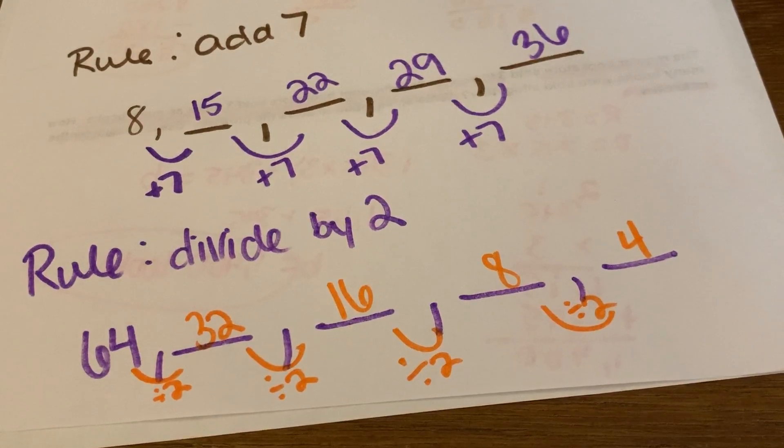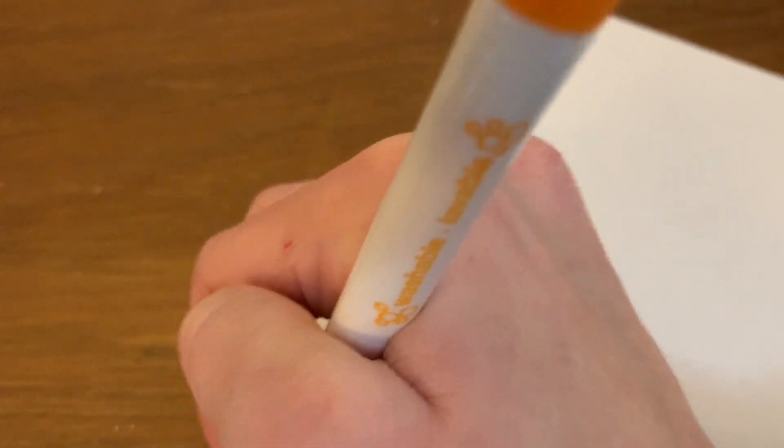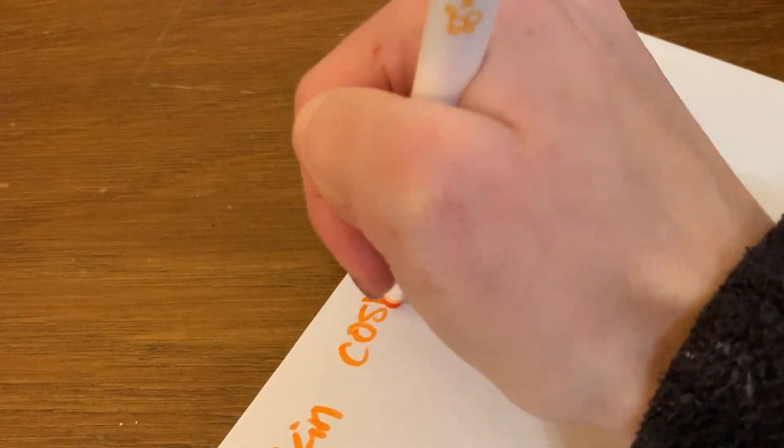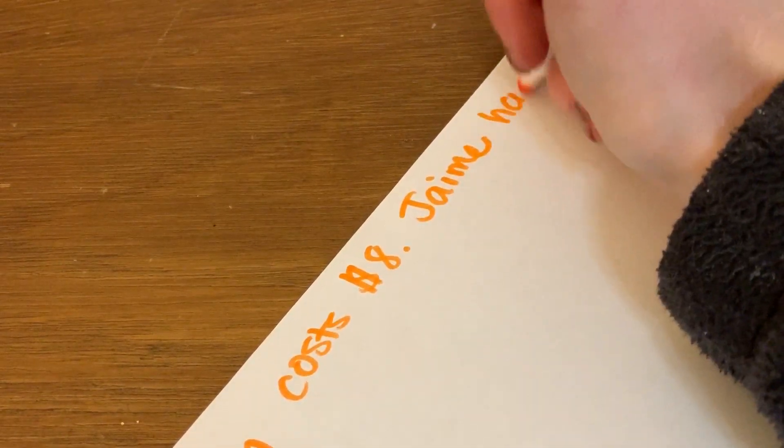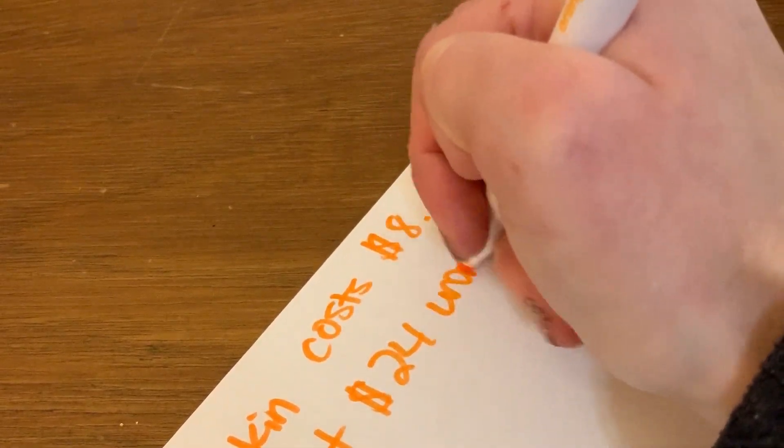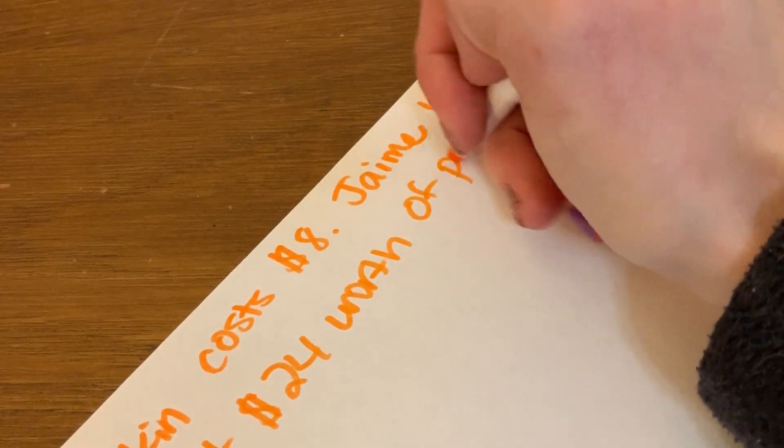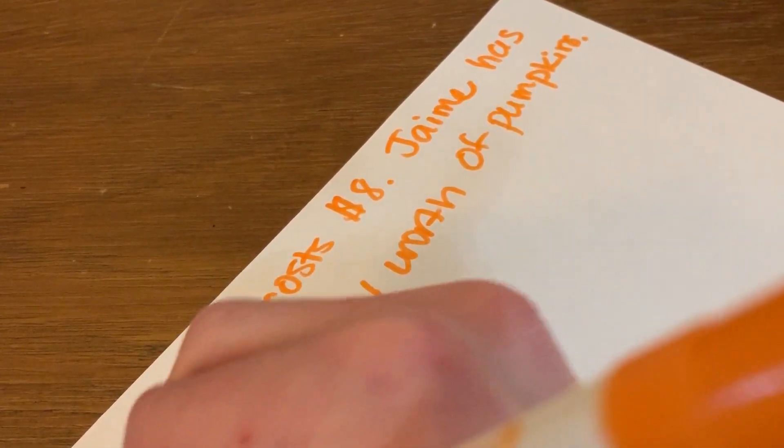Let's do one more problem, and then I'll have you guys go ahead and practice on your own. So here's what we're going to say. Each pumpkin costs $8. Jamie has already bought $24 worth of pumpkins. Suppose he buys 5 more pumpkins.